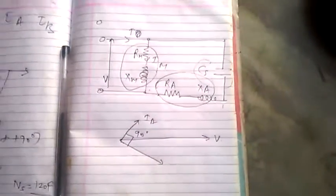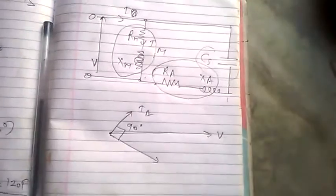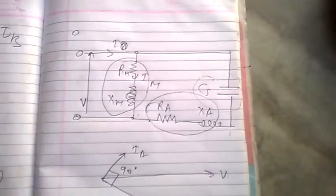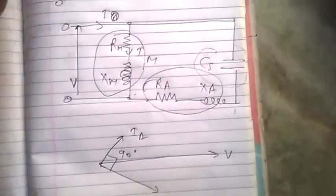Thus the windings are displaced 90 degrees electrically and their MMFs are equal in magnitude but 90 degrees apart in time phase. Therefore the motor acts like a balanced two-phase motor.